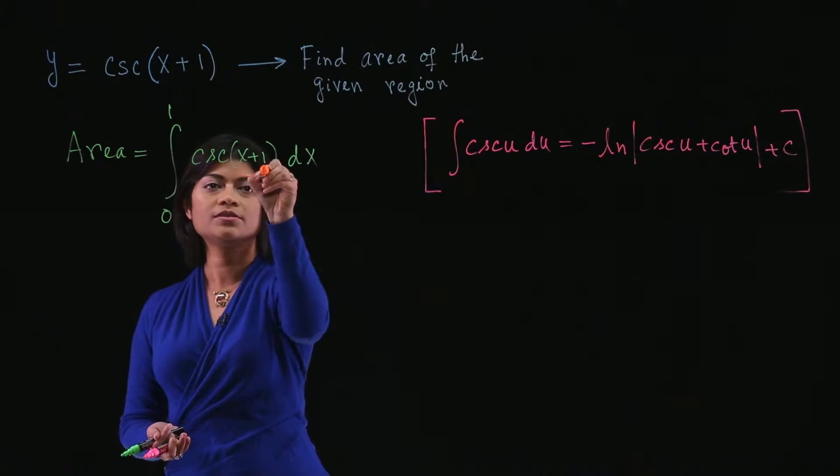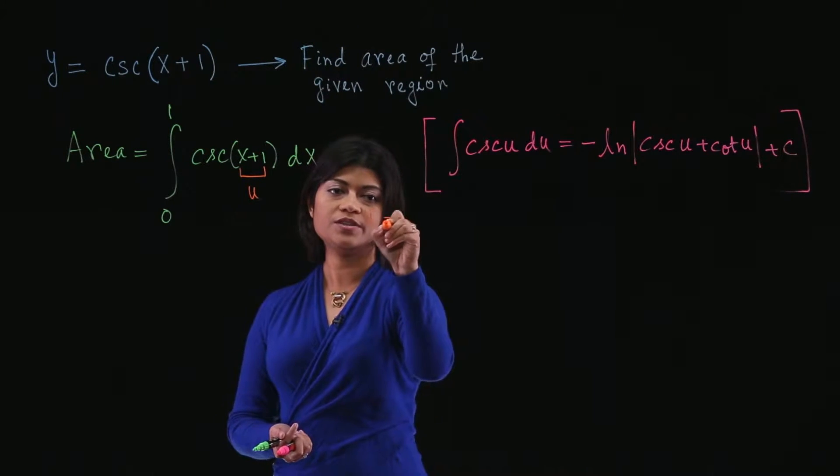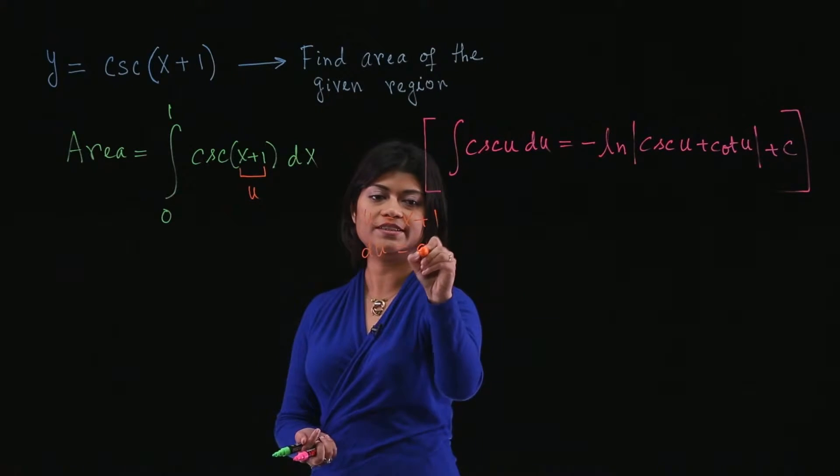Let's substitute this expression by u. So you're doing u is equal to x plus 1. And therefore, du is equal to just dx.